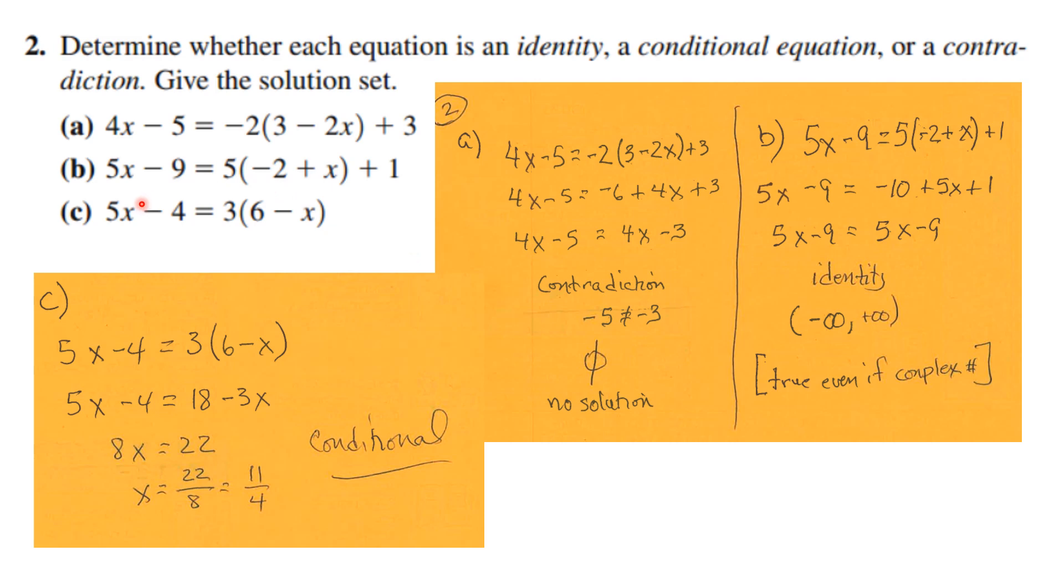For problem b, we distribute the 5 and end up with 5x minus 9 equals 5x minus 9. That's true no matter what x is. Such a thing is called an identity, and the solution set is any real number from minus infinity to positive infinity.